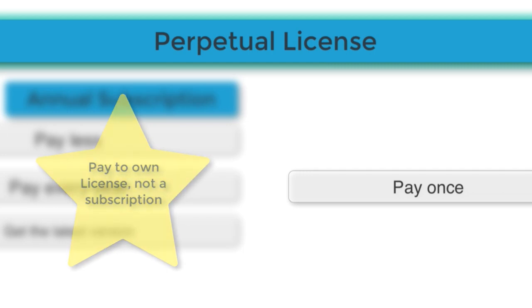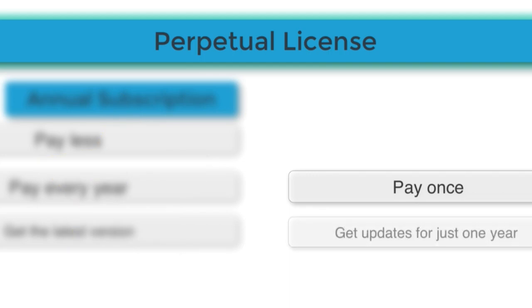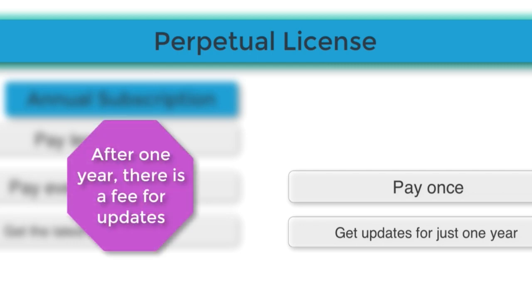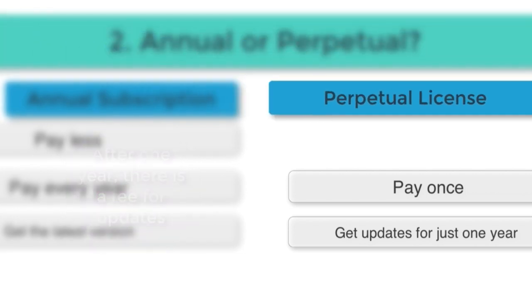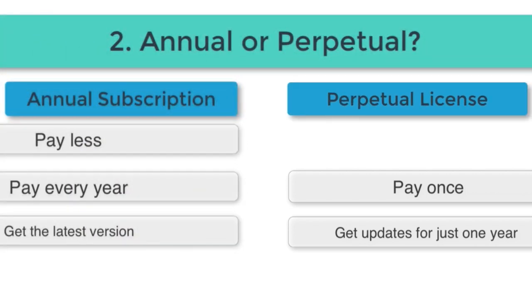The perpetual license comes with one year of maintenance, so you get updates for one year. After that, if you want updates, you have to pay FileMaker a maintenance fee. So if you intend on staying up to date with FileMaker, the annual license is really the way to go. However, if you think you're only going to buy it once and never upgrade again, then maybe the perpetual license is better for you.